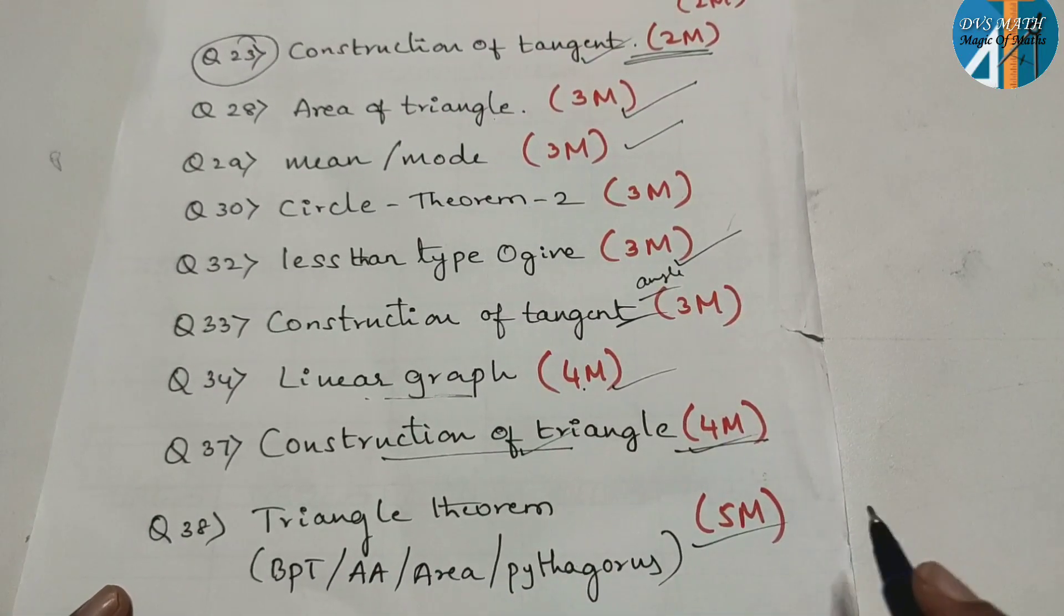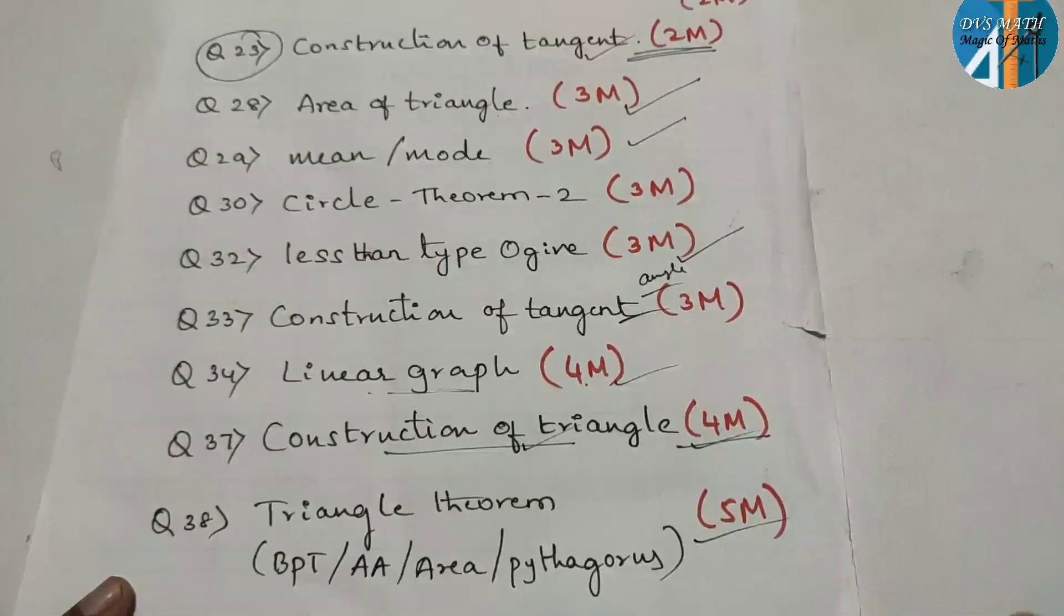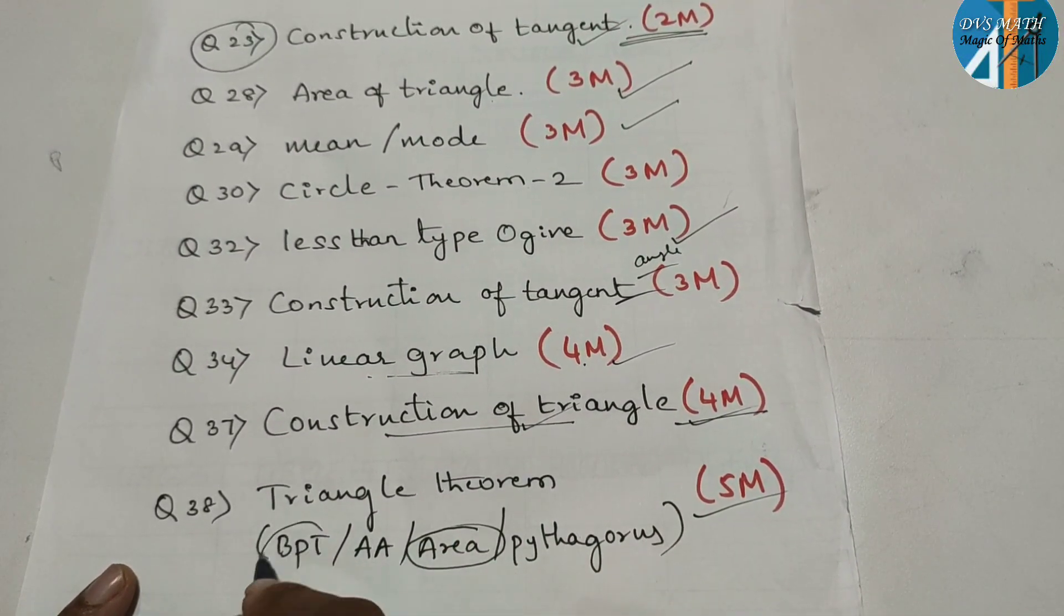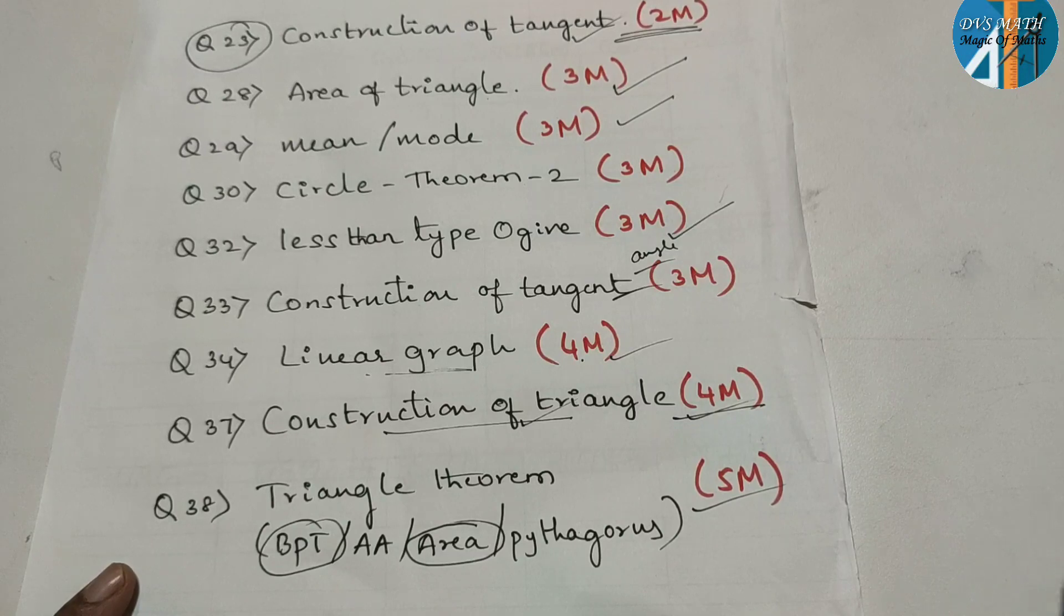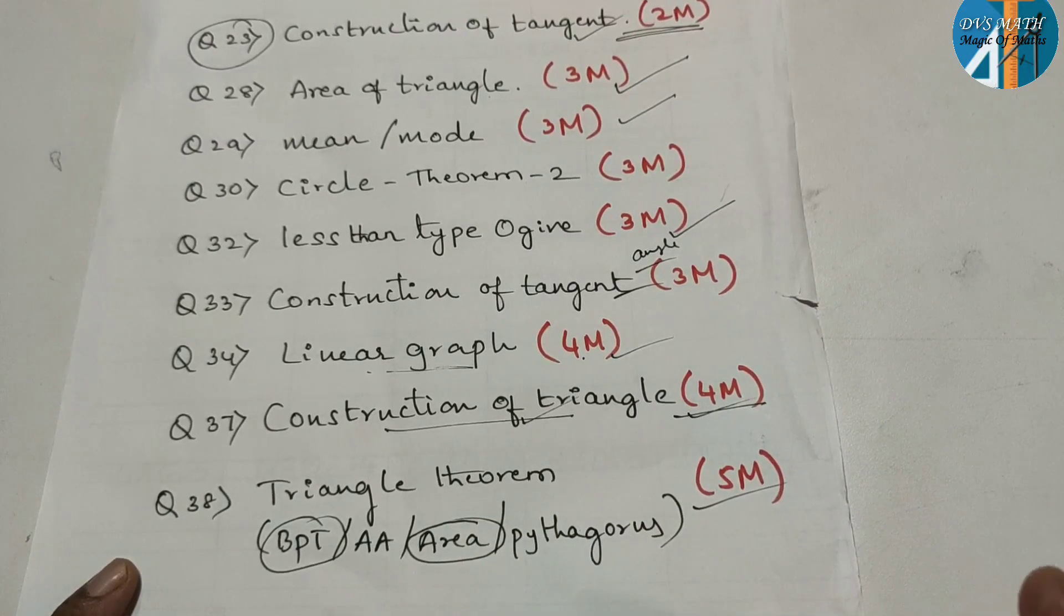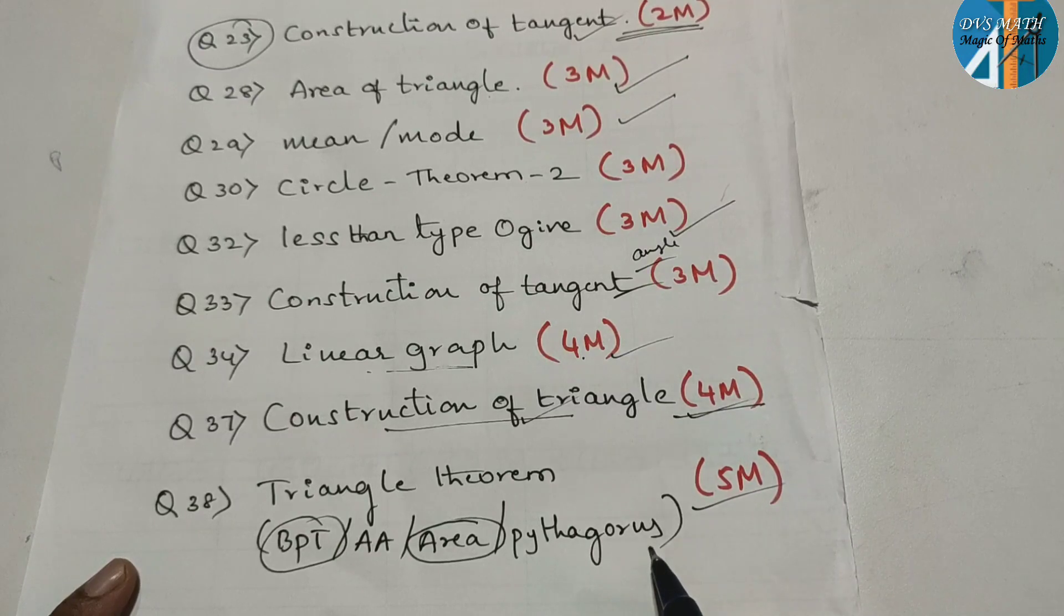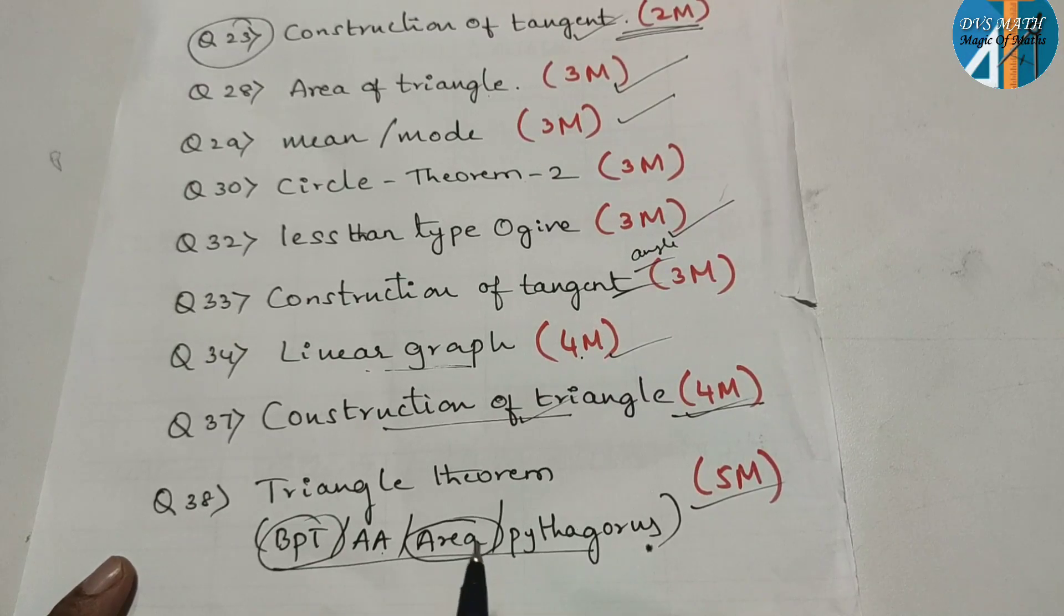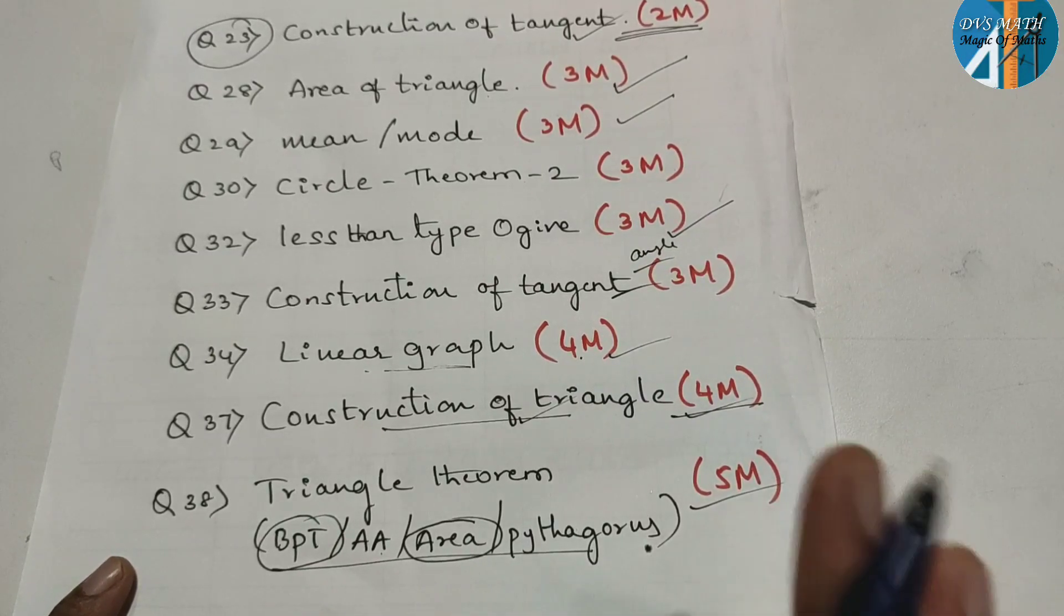In the last one, in that paper 5 marks theorem. In first paper, area related. In this paper, BPT related. Which one? You can see. I have shown here. So last time final exam Pythagoras theorem, supplementary which one. So which one you can see. So you have to practice. This is good. This also I have shown in previous session.